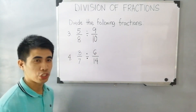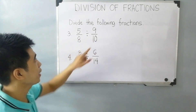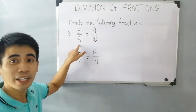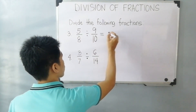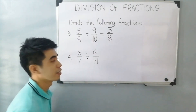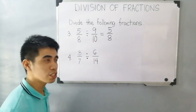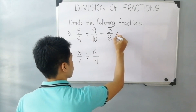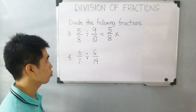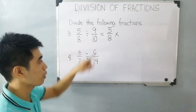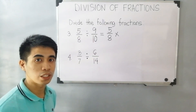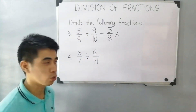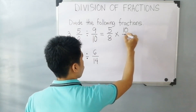Let us have item number 3: 5 over 8 divided by 9 over 10. We have 3 steps in dividing fractions. The first one is to keep or rewrite the first fraction, which is 5 over 8. Next step is to change the operation — division will become multiplication. Then get the reciprocal of the second fraction: 9 will become the denominator and 10 will become the numerator, so that is 10 over 9.